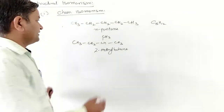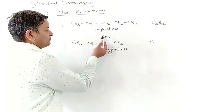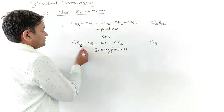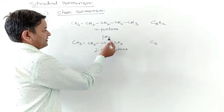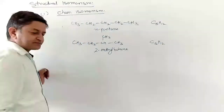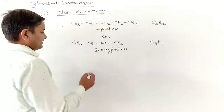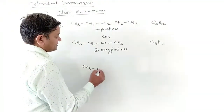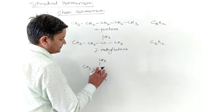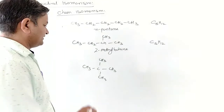Similarly, we can count the carbons: 1, 2, 3, 4, 5, and here C5. Counting the hydrogens: 3, 6, 9, 10, 12. We have another structure like CH3-C(CH3)(CH3)-CH3 — this is 2,2-dimethylpropane, also a structural isomer of pentane.